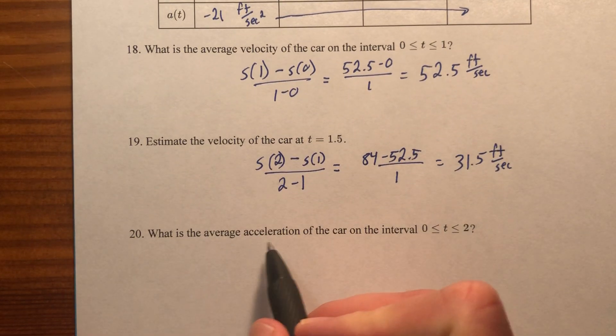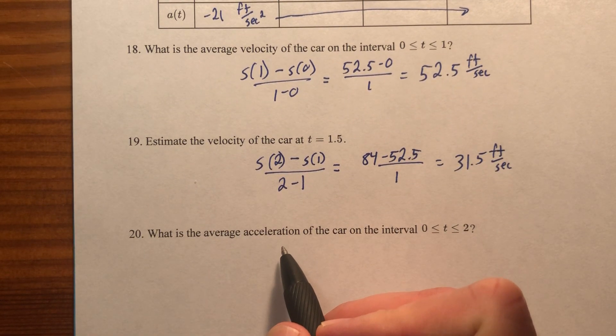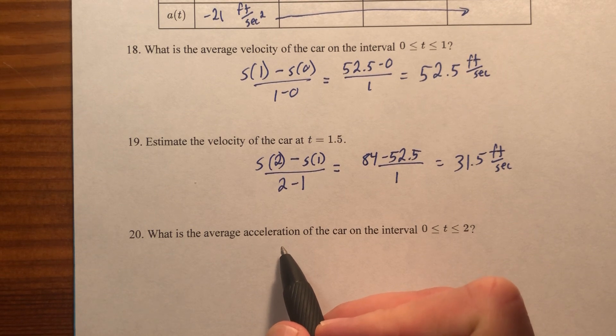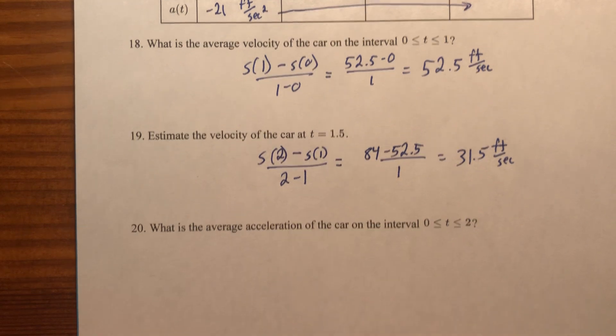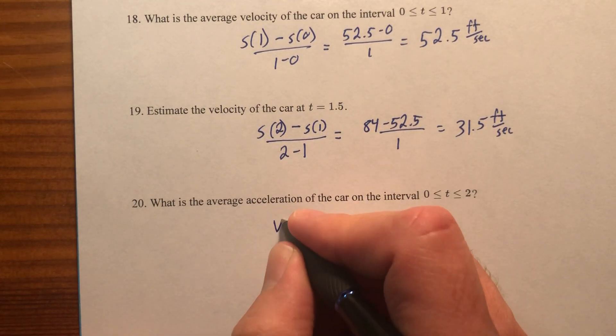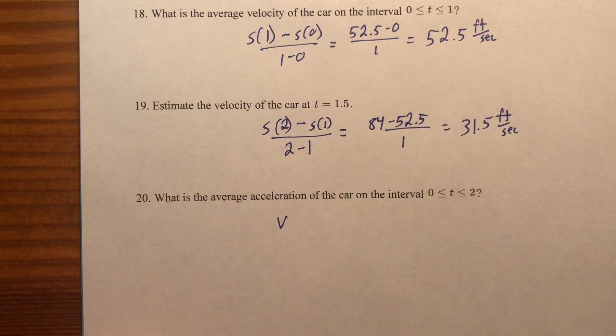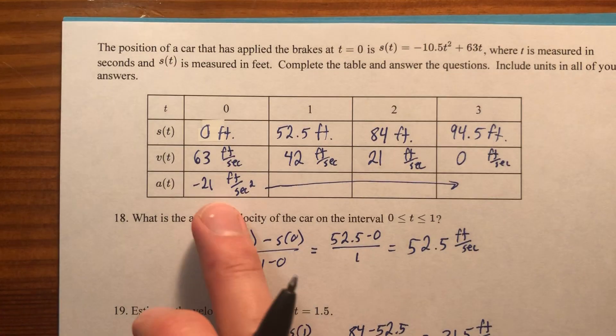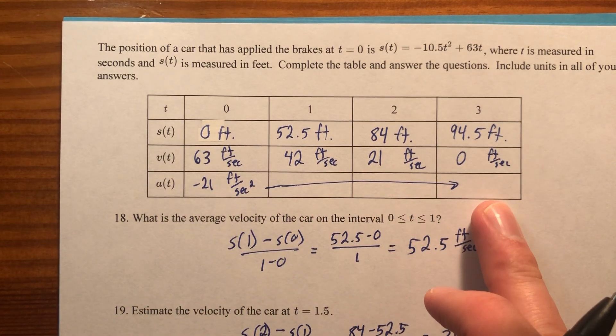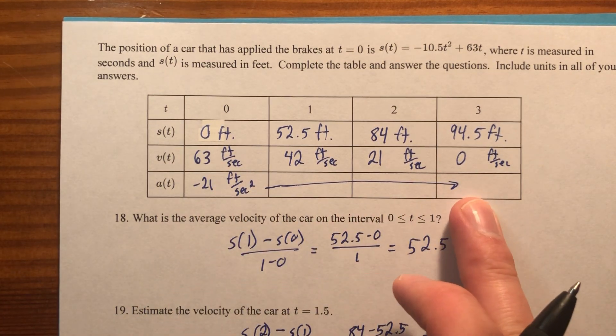What is the average acceleration? Again, don't average two, don't find the slope between two points of acceleration, find the slope between two points of velocity and the units work out to the acceleration. By the way, you know the answer to this, right? Because you know what the acceleration is just all the way across the board. There's a constant acceleration as soon as this person hits the brakes.